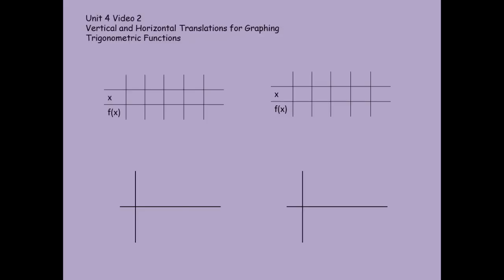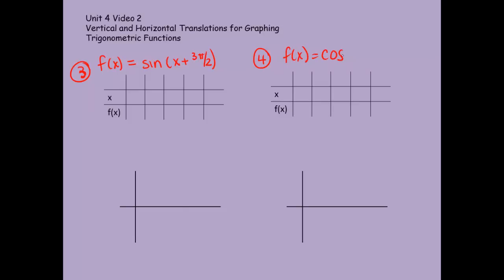Alright, I'm going to put the next two examples up. It'd be best if you paused and tried to fill out the table on your own, then unpause to check the table. After you've checked the table, try to graph it yourself by pausing again, then unpause to check your graph. So here are two more examples of phase shifts left and right.